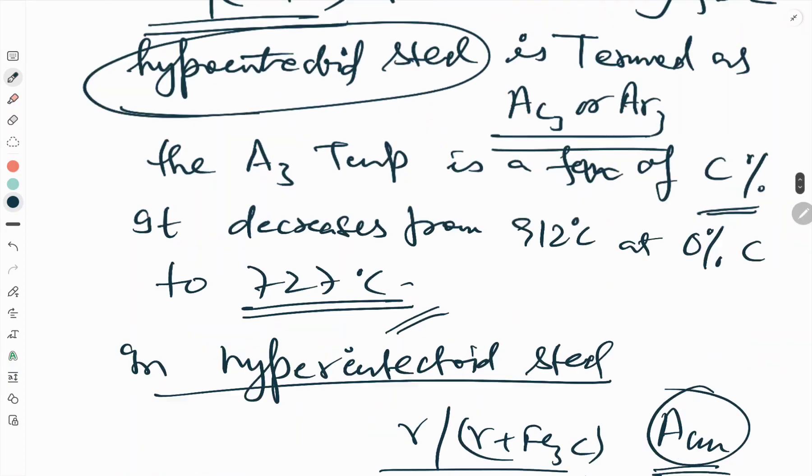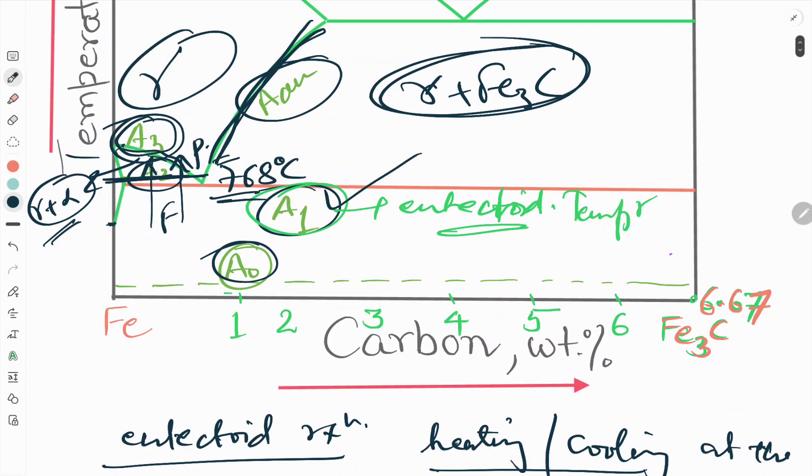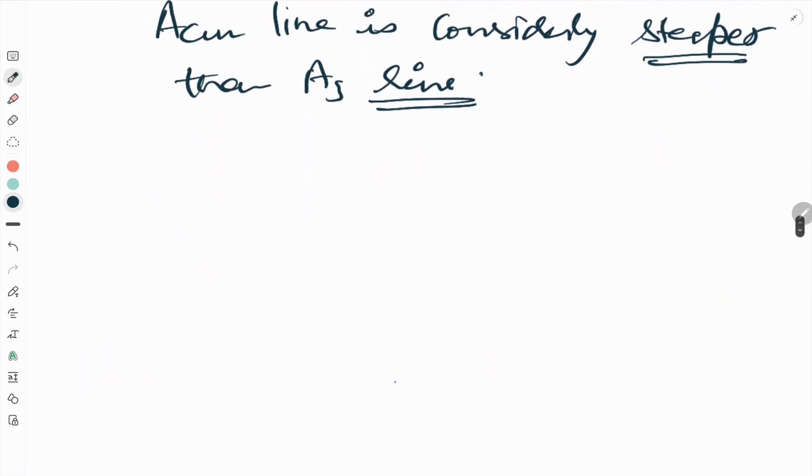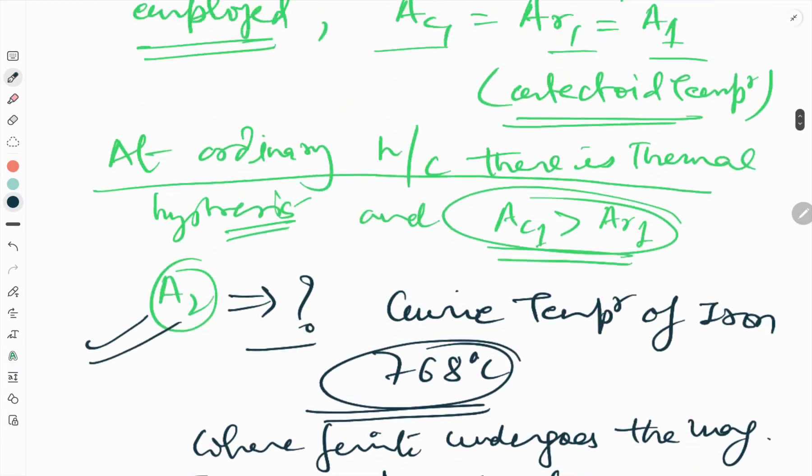So we have seen all these: A1, A2, A3, ACM. The only left is A0. About A0, this is the Curie temperature of cementite, that is 210 degree centigrade. This is called A0.